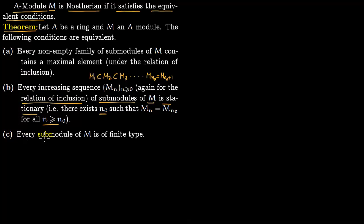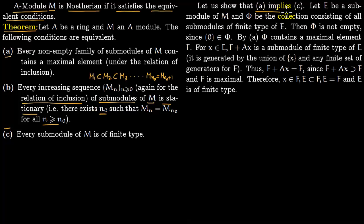Condition C: every submodule of M is of finite type. Now let us start proving the equivalences. First we show A implies C. Let E be a submodule of M, and let φ be the collection consisting of submodules of finite type of E. We want to show that E itself is of finite type.